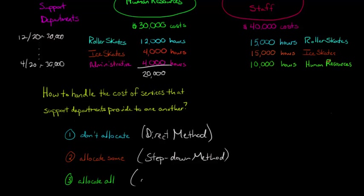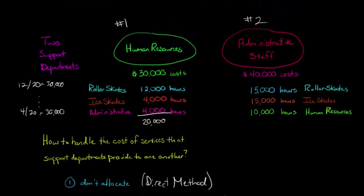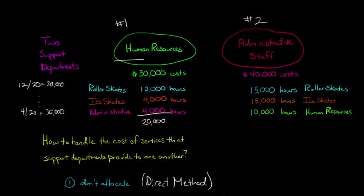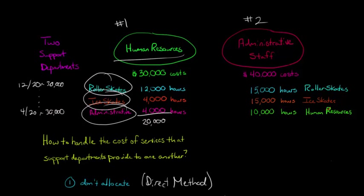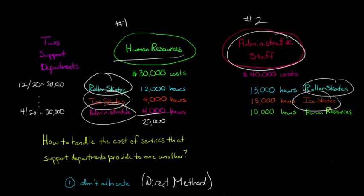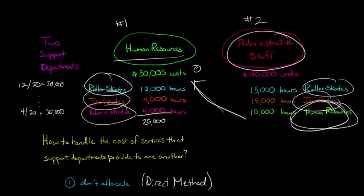The third way is to allocate all of the costs using the reciprocal method. With this method, we do a back-and-forth process: starting with HR, we allocate to roller skates, ice skates, and administrative. Then we go to administrative and allocate back to roller skates, ice skates, and back to HR — unlike step-down. Because we've now allocated costs back to HR, HR is no longer zero; it's higher, so we do the process again iteratively until all costs are fully allocated.